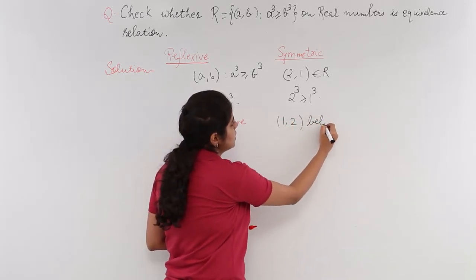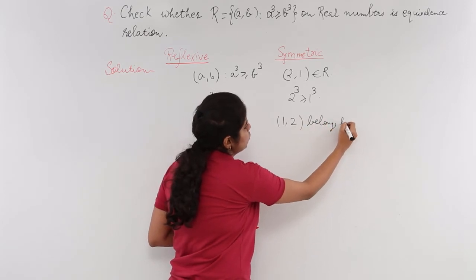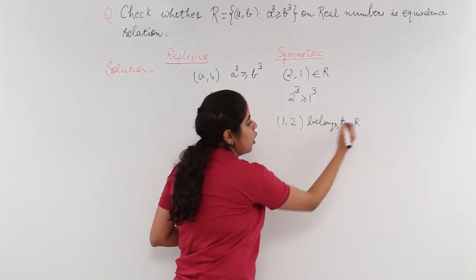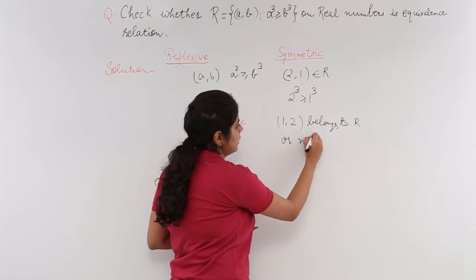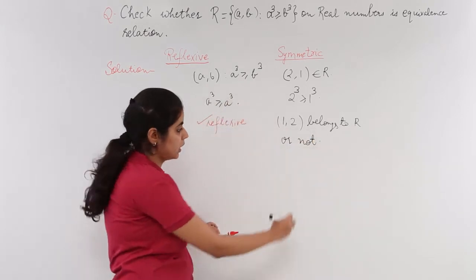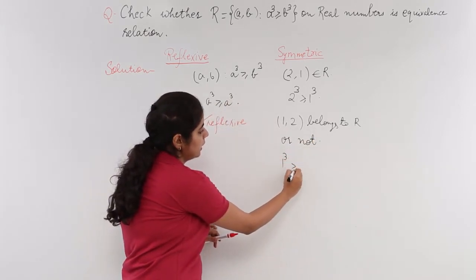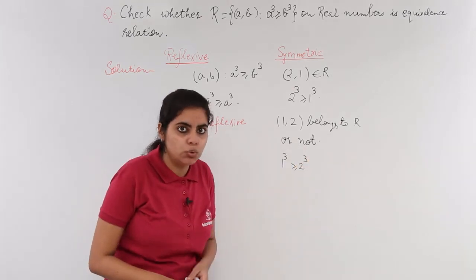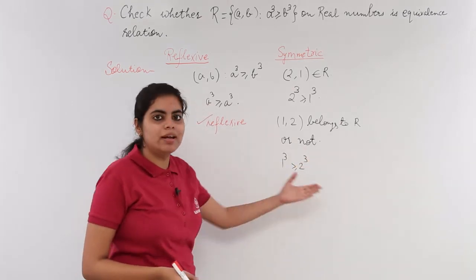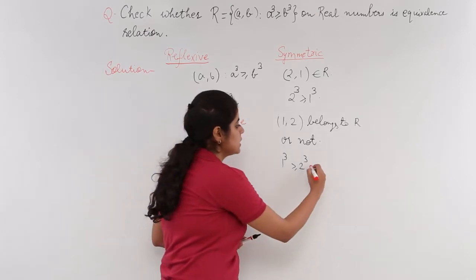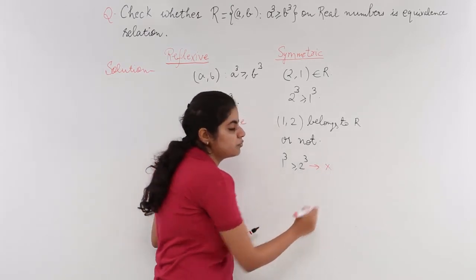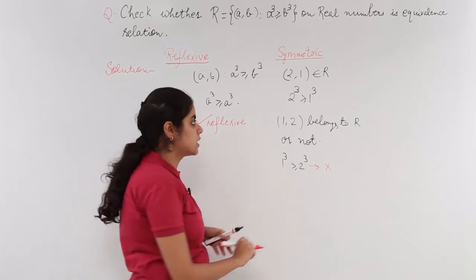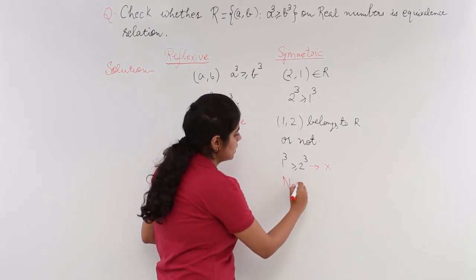Let's check whether (1,2) belongs to R or not. Is 1³ ≥ 2³? 1³ is 1, 2³ is 8. Is 1 greater than 8? No. So this is incorrect. This is not followed, and hence this is not symmetric.